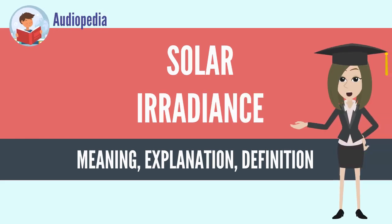Solar irradiance is the power per unit area received from the sun in the form of electromagnetic radiation in the wavelength range of the measuring instrument. The solar irradiance integrated over time is called solar irradiation, insolation, or solar exposure. However, insolation is often used interchangeably with irradiance in practice.